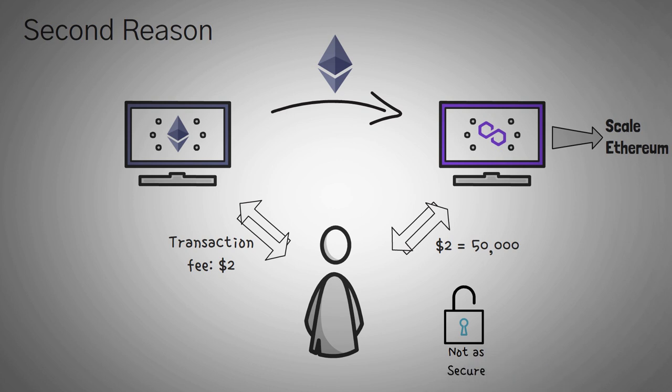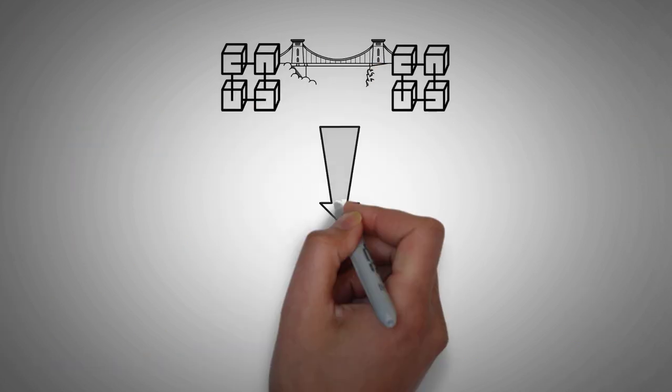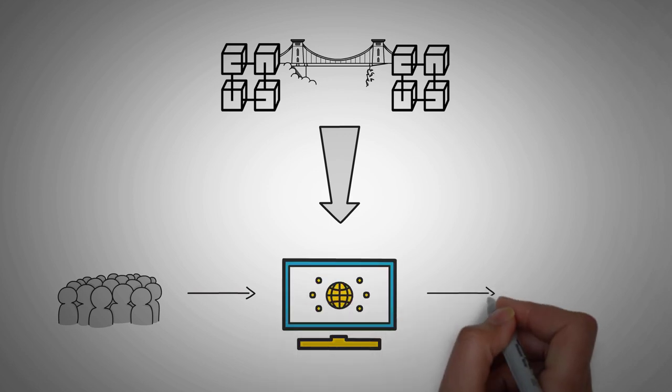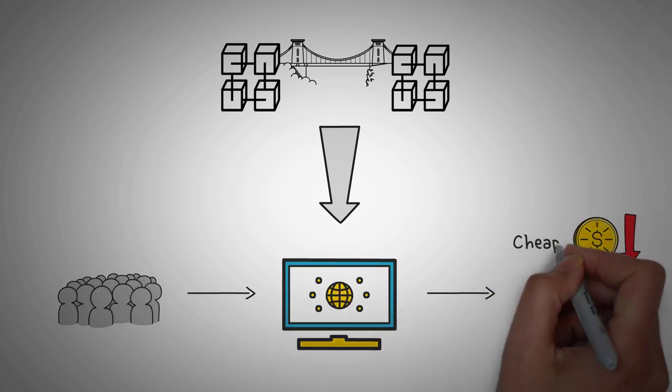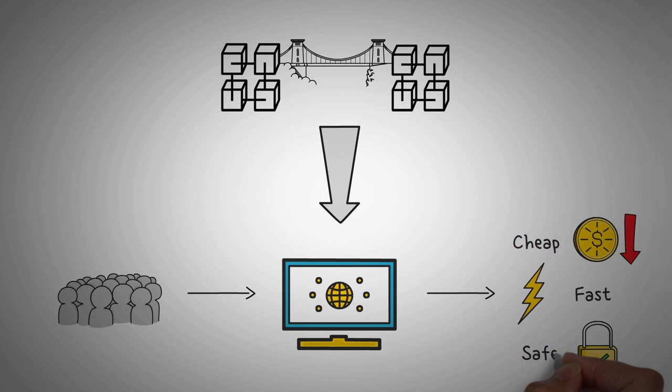This is simply because, by nature, polygon is a bit more centralized. So, bridges are needed so that regular people can more easily access new networks. And they're also needed because some networks are cheaper, faster, or maybe safer than other networks.